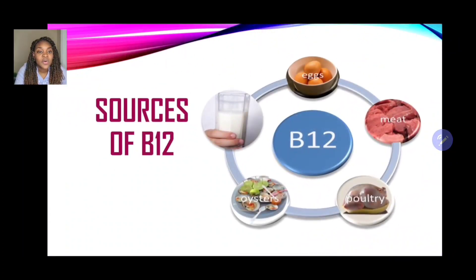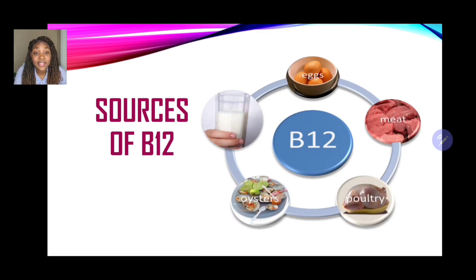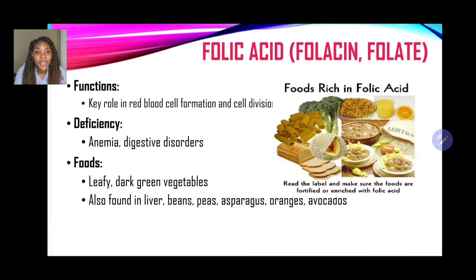Sources of B12, as we said before, are only from animal sources: milk, eggs, meat, poultry, and oysters. It is very important for strict vegetarians to also take supplements of this particular nutrient because it is very important to have in the diet.